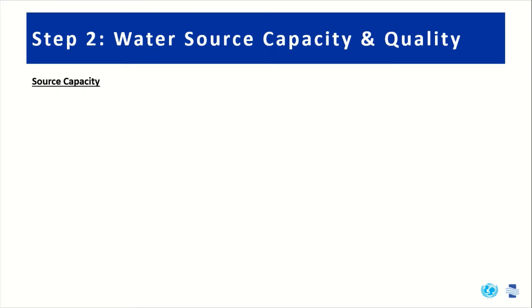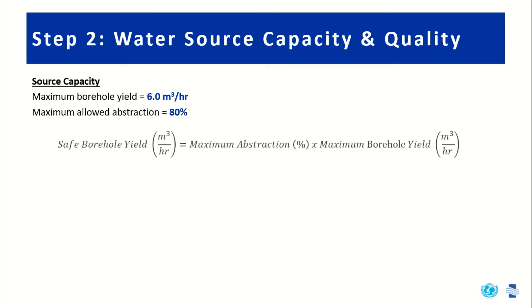For this project, there's a new borehole that was drilled and the yield test revealed a maximum borehole yield of 6 cubic meters per hour. However, in this region, there's an imposed limit to the percentage that we can extract from that total maximum yield, which is 80%. So, in order to calculate the safe borehole yield, we'll multiply the maximum extraction percentage by the maximum borehole yield to get 4.8 cubic meters per hour.